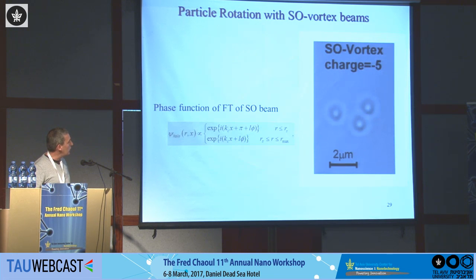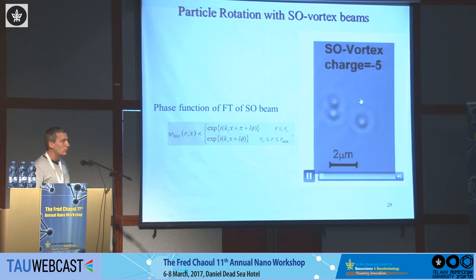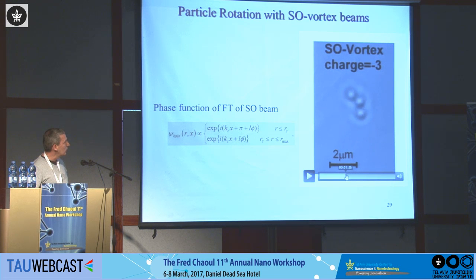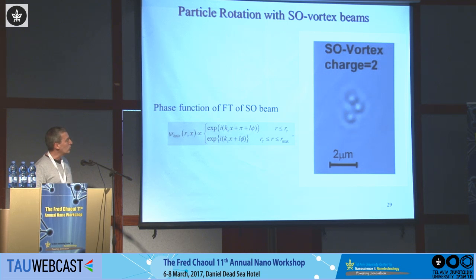With super-oscillating vortex beams, we can also control the rate of rotation by changing the charge. As the charge becomes smaller, the rotations become faster. We can also switch the direction from clockwise to counterclockwise. There is an outer ring that can also contain particles, but they are less interesting since the central spot is where the strong confinement occurs.